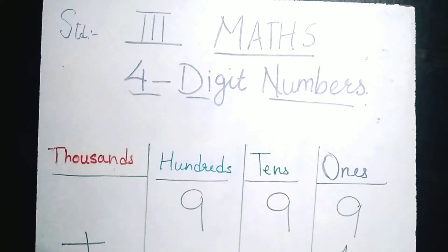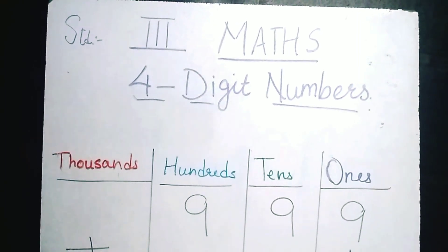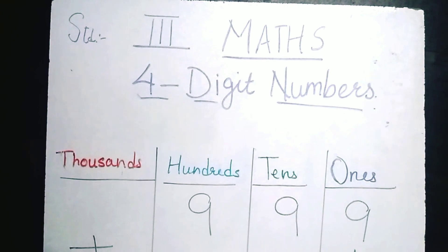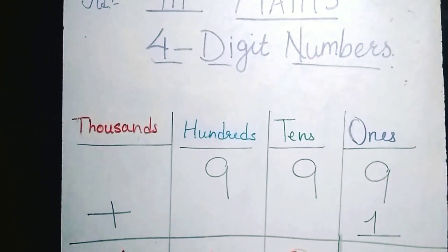As you all know, if we add 1 to any given number it gives the next number. So let's see what happens if I add 1 to 999.